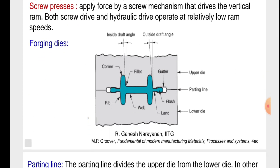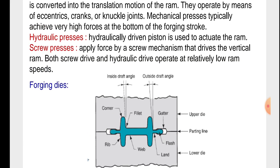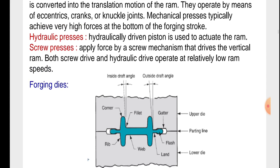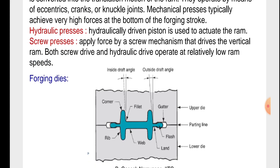Forging dies. The figure shows the forging dies. In this figure, we will see the inside draft angle, outside draft angle, corner, fillet, gutter, rib, web, flash, and land. There are two parts of the forging dies: upper die and lower die. In between, there is a parting line.